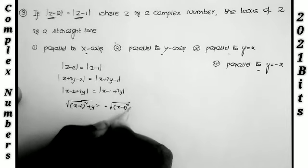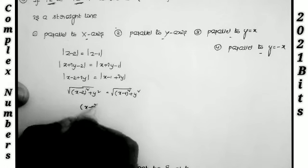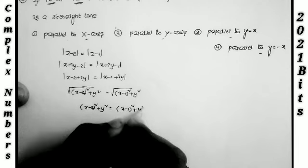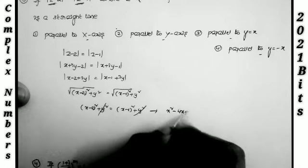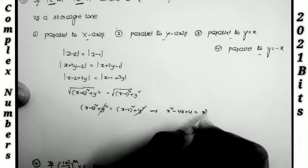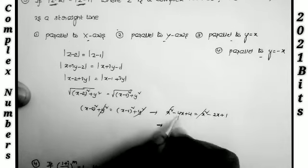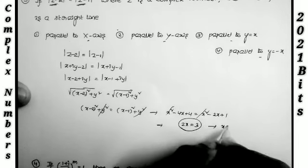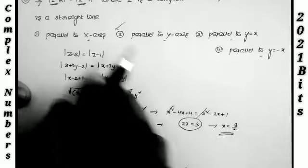Cancelling y² from both sides: x² − 4x + 4 = x² − 2x + 1. Simplifying: −4x + 4 = −2x + 1, so 4 − 1 = 4x − 2x, giving 3 = 2x, thus x = 3/2. This is a line of the form x = k, which is parallel to the y-axis.